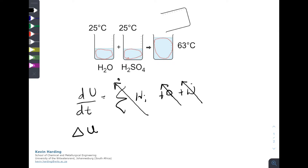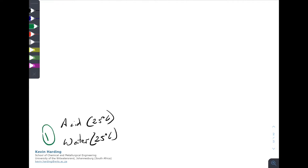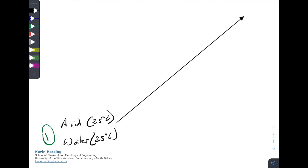We're left with ΔU = 0. Because there's no change in pressure or volume, we can rewrite that as ΔH = 0 for that system from time one to time two. So the mixture forms at 63°C, and we've shown that ΔH = 0 from point one to point two.